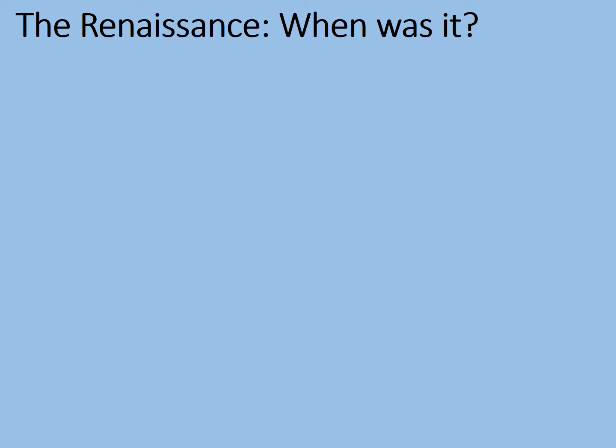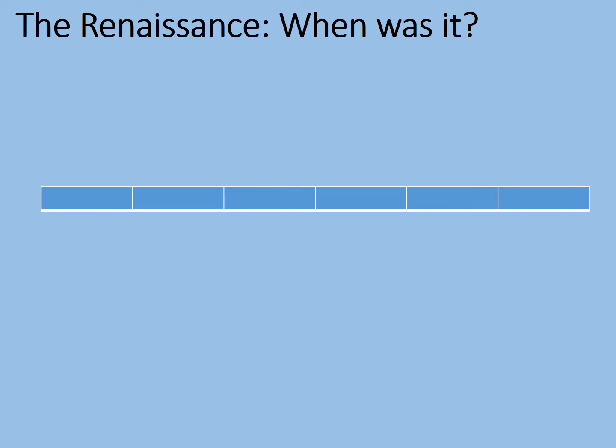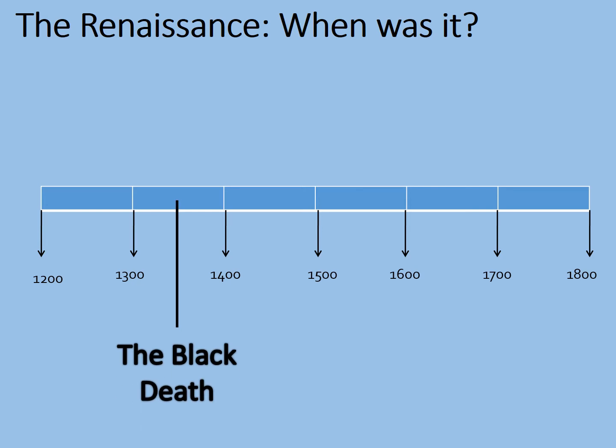Let's consider when the renaissance was, putting it in context with the rest of our studies. The medieval period was the first period we studied; now we're looking at the renaissance, which follows on from it. This timeline goes from 1200 right the way up to 1800. The Black Death reached Britain in 1348, placed roughly halfway between 1300 and 1400. The Tudor period in English history was between 1485, with the accession of Henry VII, and 1603, with the death of Queen Elizabeth I.